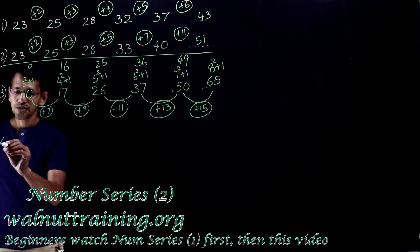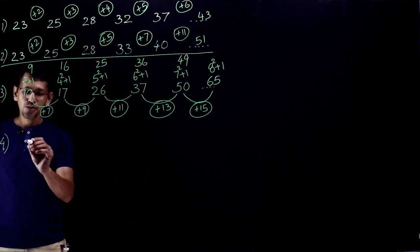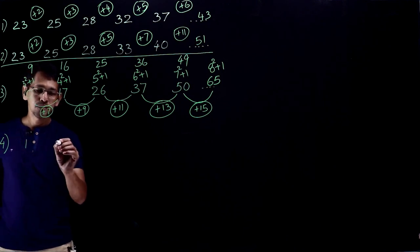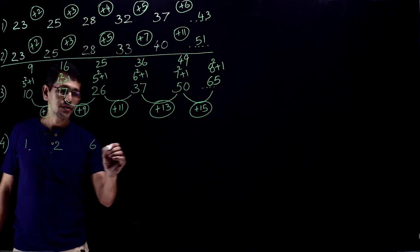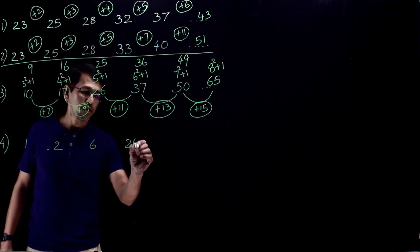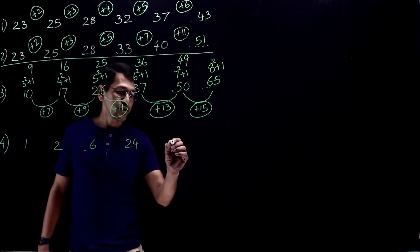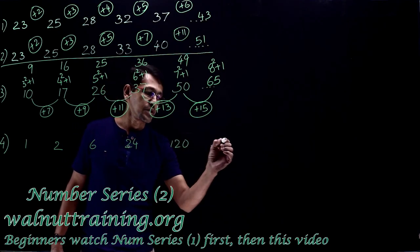Another question right here, question number 4. If the question is 1, 2, 6, 24, 120, what's the next number in this series?